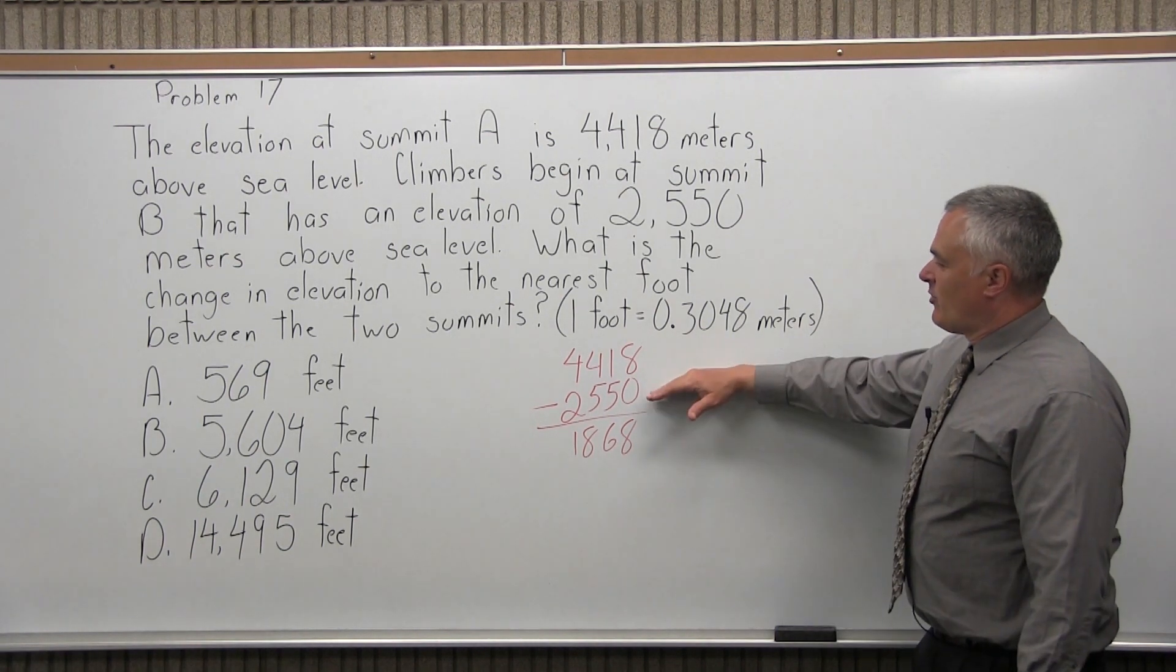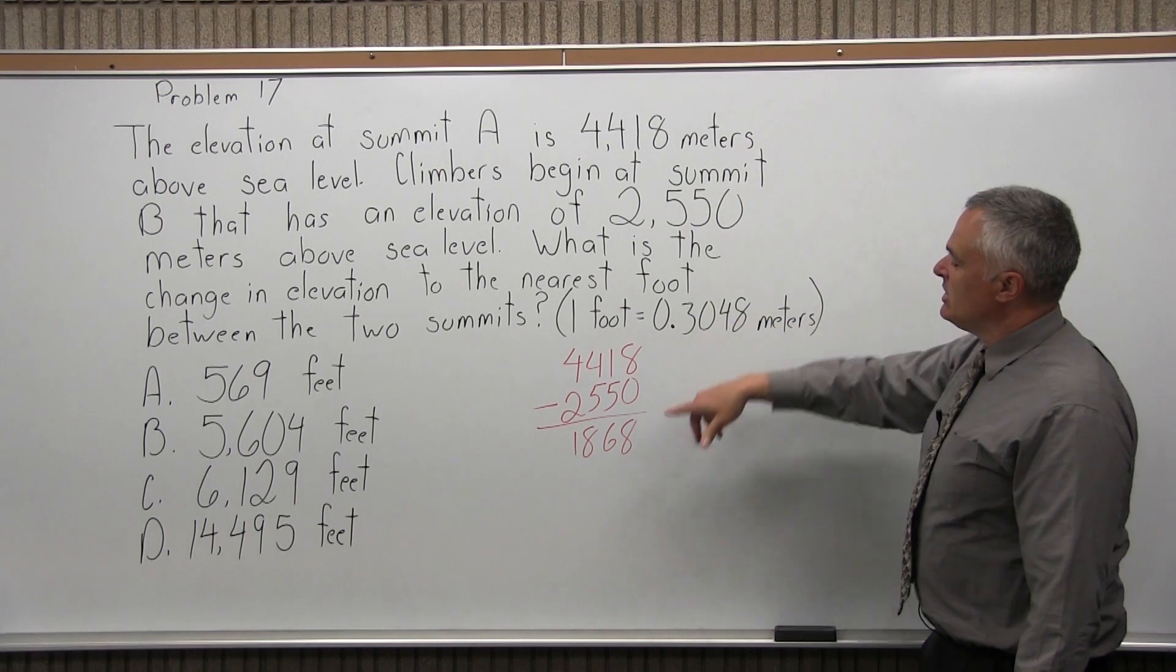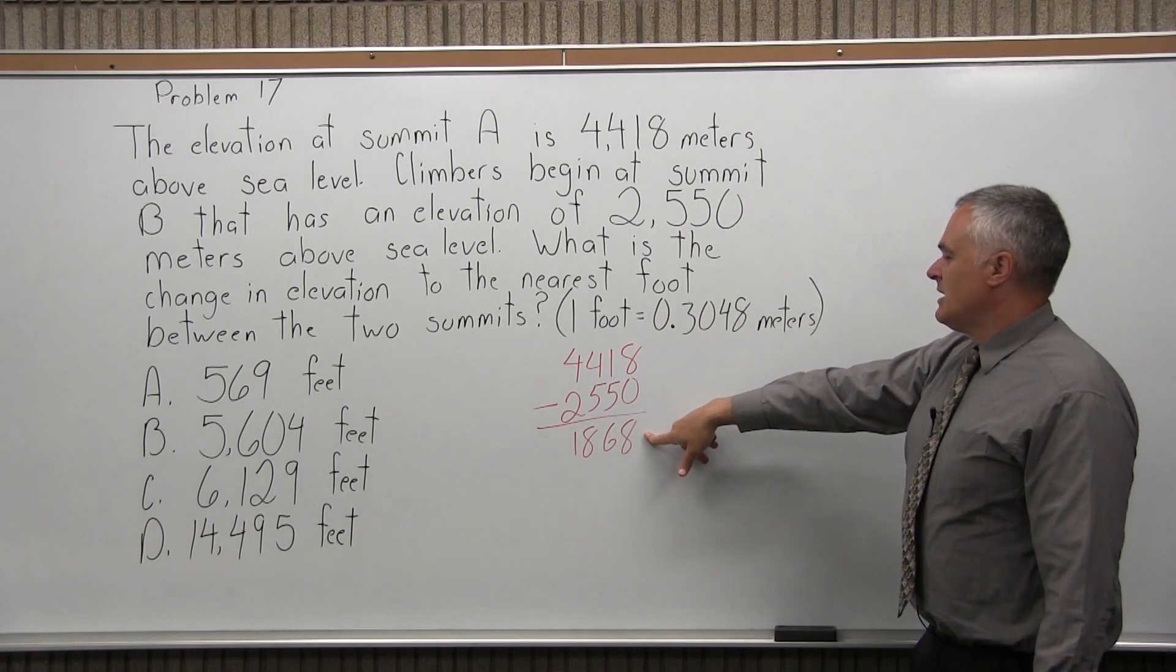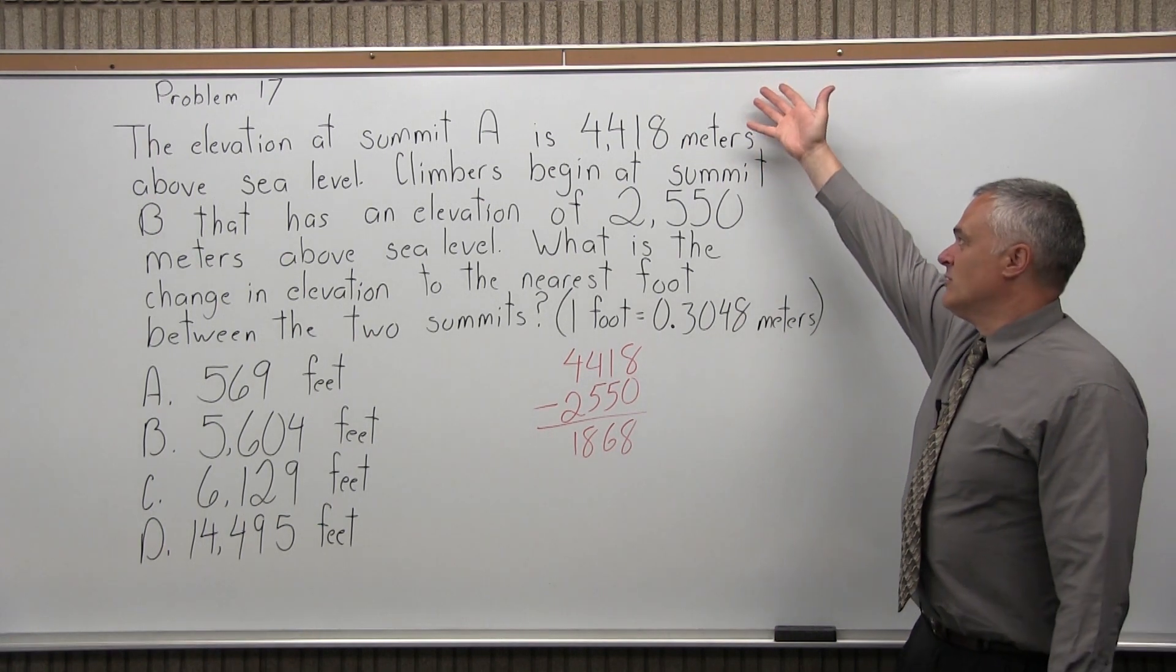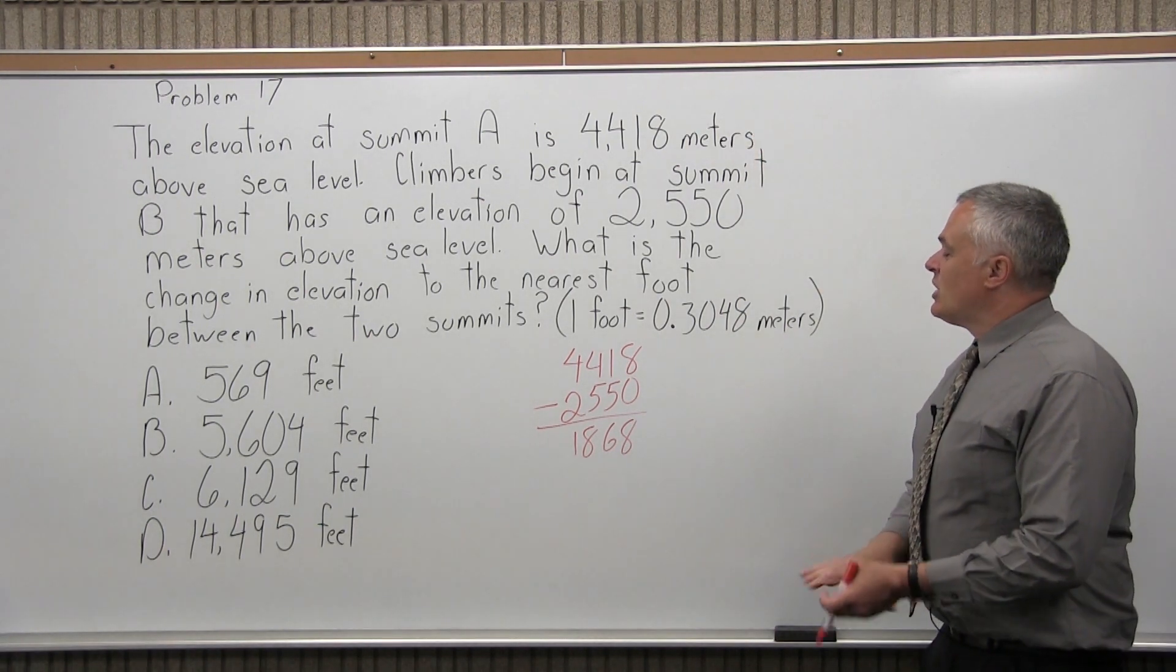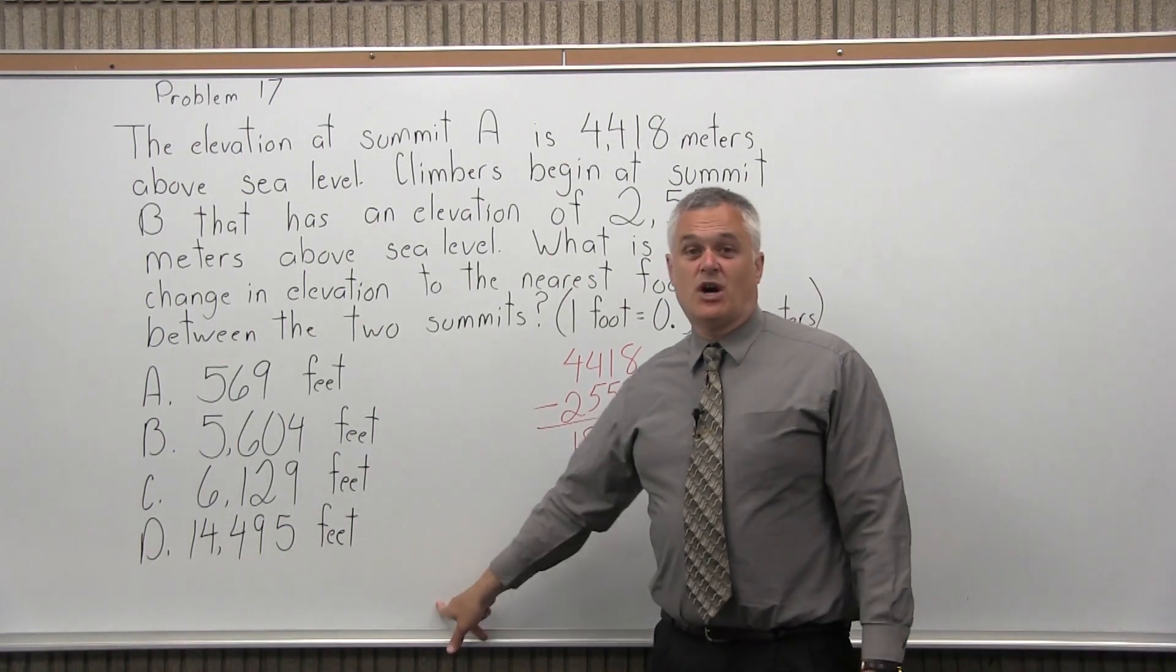So we can go 4418 minus 2550 and do that subtraction. And it comes out to 1,868. That's how much you have to climb from summit B to get to summit A. So if you start at 2550, you climb another 1,868 and you'll get to the higher elevation of 4,418. So now, if I look, my answer of 1,868 is not any of the options.